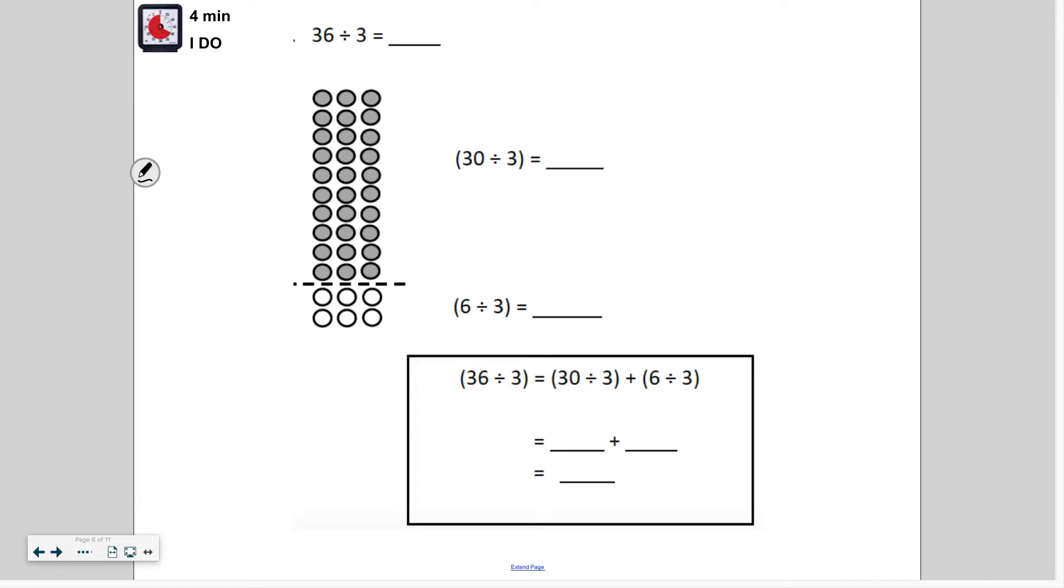So let's go ahead and see how they broke apart the dividend of 36. So I see 30 and 6. So that is how they broke it apart. 30 plus 6 would give me 36. So instead of dividing 36 by 3, I'm going to divide 30 by 3 and then divide 6 by 3. So I'm going to use my array to help me out.